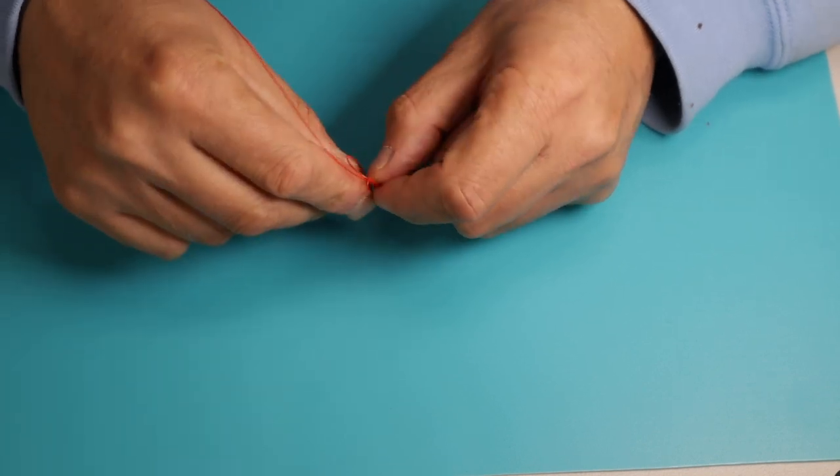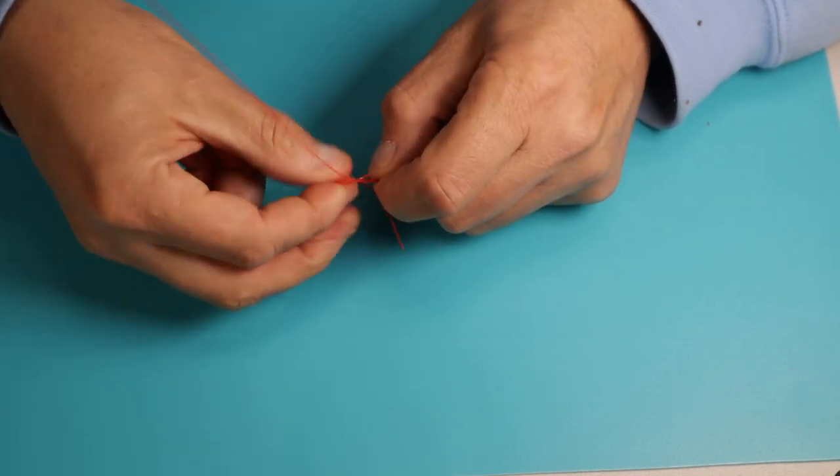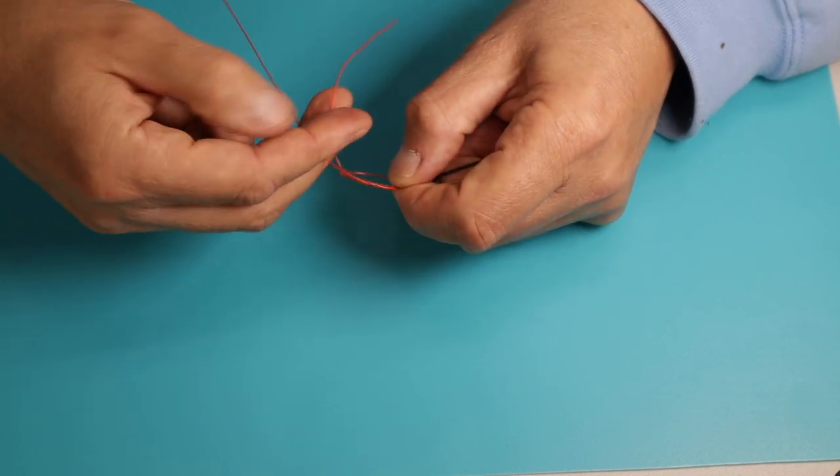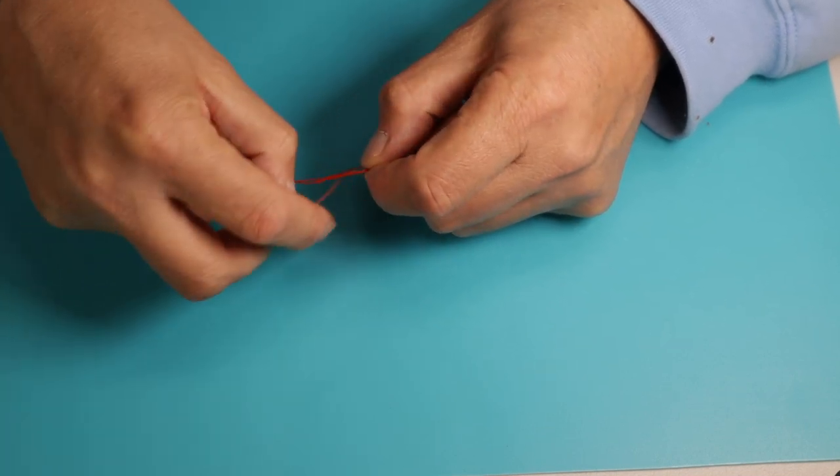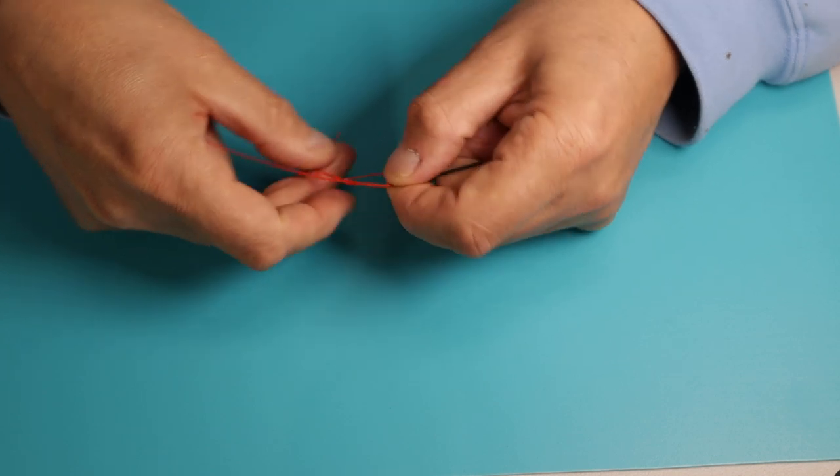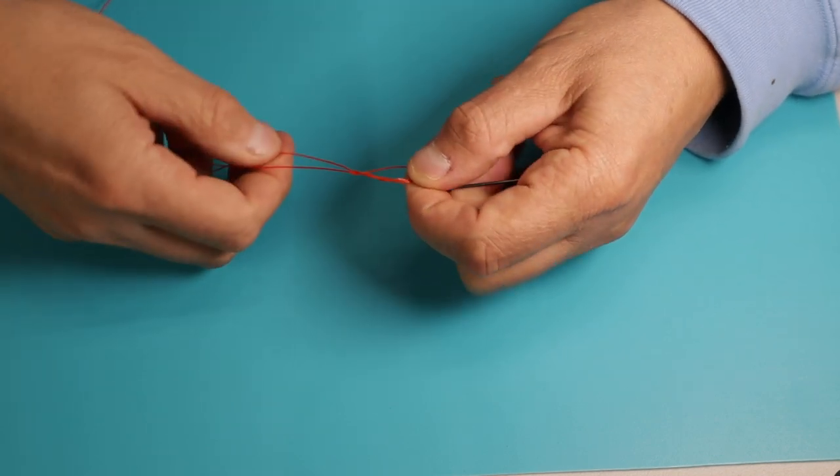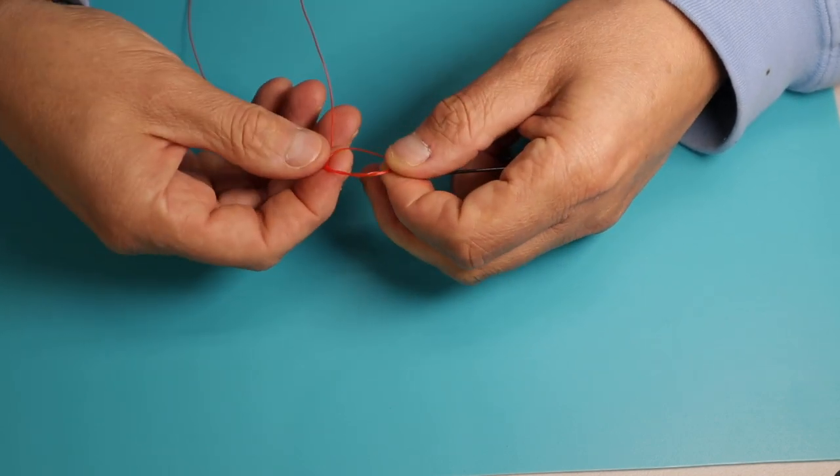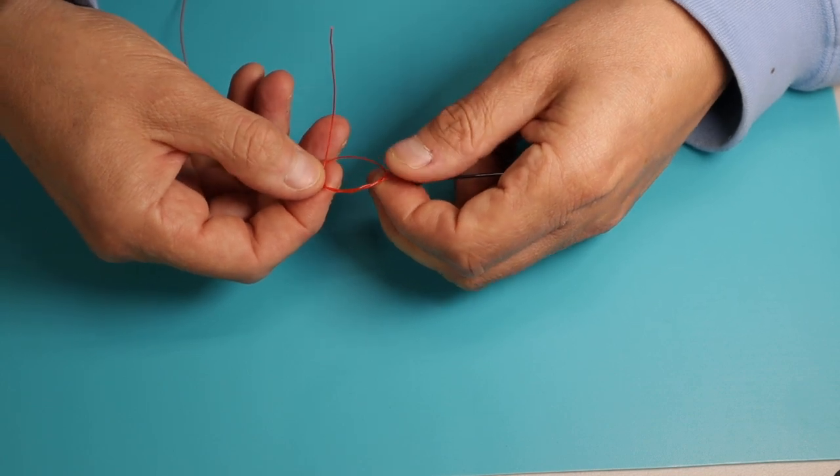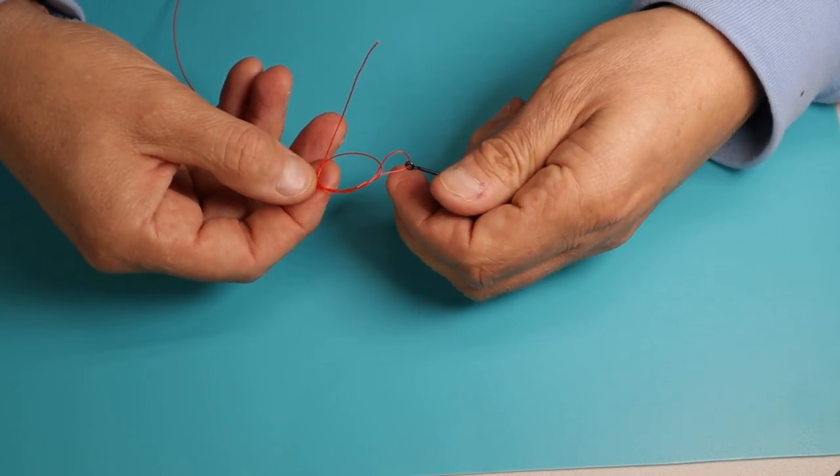There's one turn, two turns, and three turns. I'm only going to go three turns with this one. You should end up with three turns around your main line in a loop formed like that.